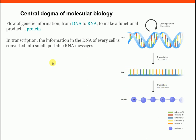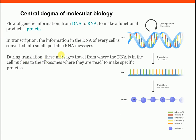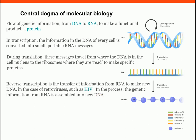In translation, the messages from messenger RNA are converted to make specific proteins. So translation is the process where RNA is converted into protein. In normal cases, genetic information flows from DNA to RNA and from RNA to protein — this is the central dogma of molecular biology.